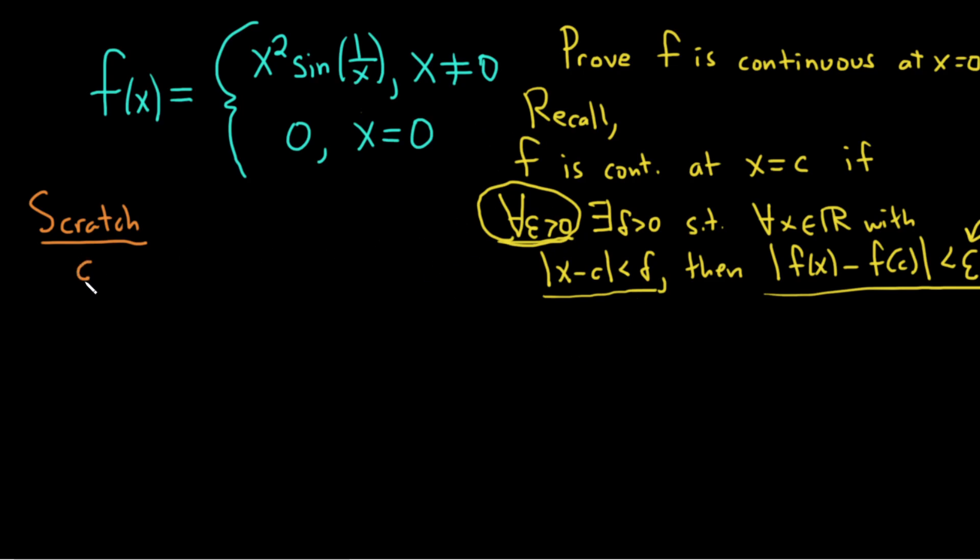So let's just kind of work through this and see what we can come up with. So we're going to have an epsilon greater than 0, and we're going to need to find a delta greater than 0